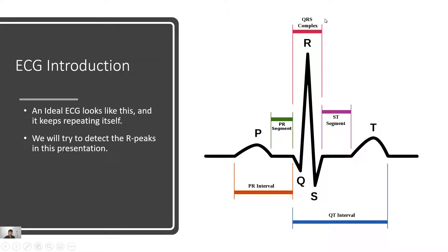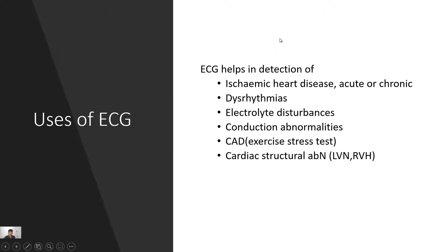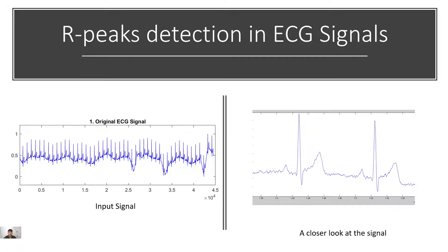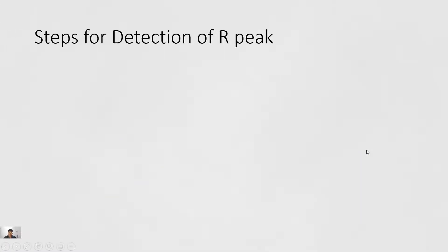What are the uses of ECG? ECG helps in detection of heart arrhythmias and electrolyte disturbances. It also helps in detection of conduction abnormalities and in exercise stress tests. As we can see in this picture, this is what an original ECG looks like, and this is a closer look at the ECG signal.